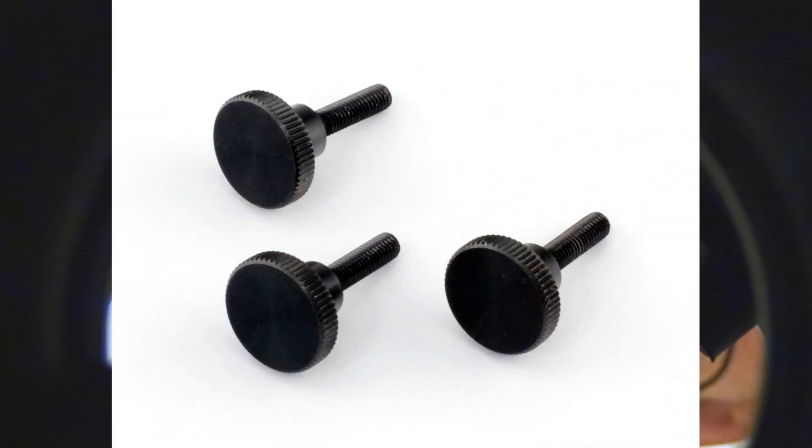You can actually get some aftermarket screws that make this easier called Bob's Knobs, and they're just like nuts with plastic tops on that you can just turn, so you don't need to use an Allen key.